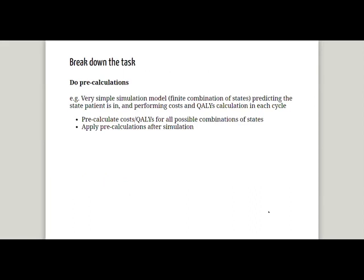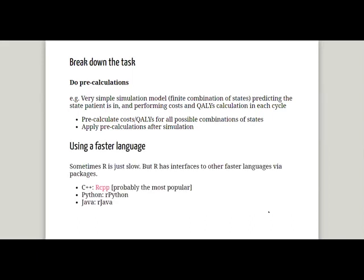You can also do pre-calculations. For example, in a simulation model predicting patient states with cost and utility calculations per cycle, if you have a finite combination of states you can pre-calculate costs and utilities for all finite combinations, then apply those pre-calculations after simulation instead of recalculating every cycle. Sometimes R is just slow and you may want to use C or Python — R has interfaces to these languages via packages, which is quite convenient.